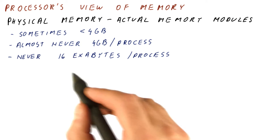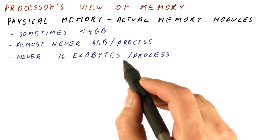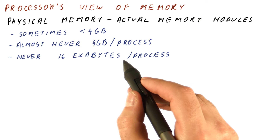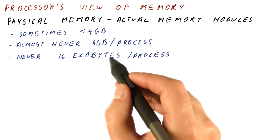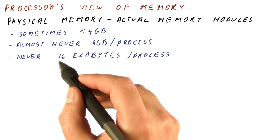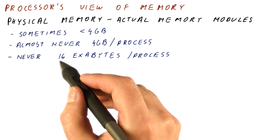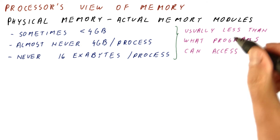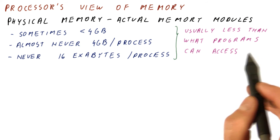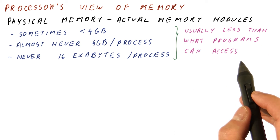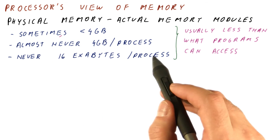16 exabytes is how much memory we would need if we have 2 to the 64th memory locations, which is what you would have with a 64-bit address. So if each process in a 64-bit machine thinks it has this much memory, there is just no way we can have enough actual memory for that. We conclude that the amount of physical memory we have is usually less than what all the programs can access — if all the programs access all the memory they possibly can, they will access much, much more than the memory we actually have.